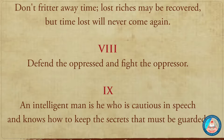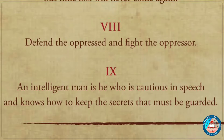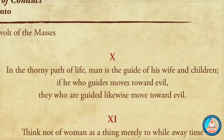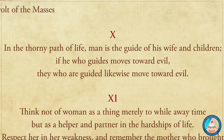An intelligent man is he who is cautious in speech and knows how to keep the secret that must be guarded. Ang taong matalino'y ang may pag-iingat sa bawat sasabihin at magtutong ipaglihim ang dapat ipaglihim. The third path of life: man is the guide of his wife and children. If he who guides moves towards evil, they who are guided likewise move towards evil. Sa daang matinik ng kabuhayan, lalaki ay siyang patnugot ng asawa't mga anak. Kung ang umaakay ay tungo sa sama, ang patutunguhan ng iaakay ay kasamaan din.